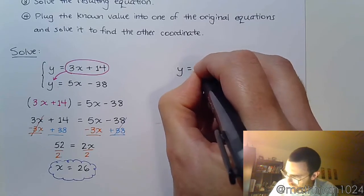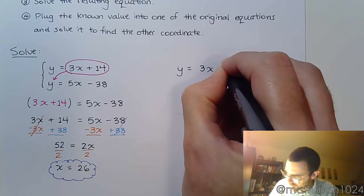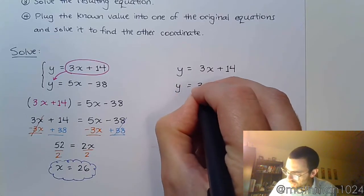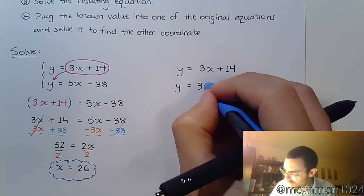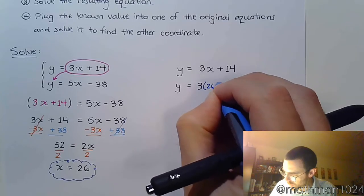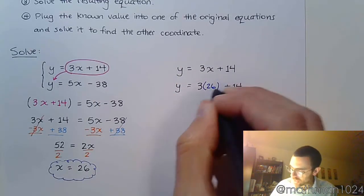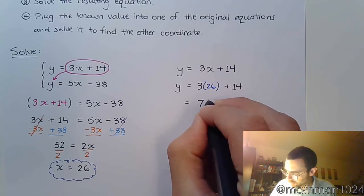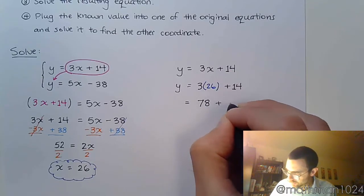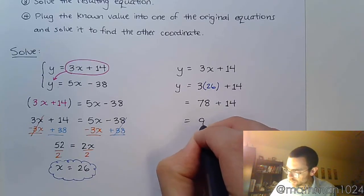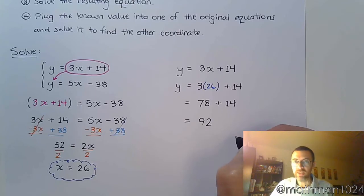Let's go back here to y is equal to 3x plus 14. Now I'm going to replace the x with 26 because that's what we said it was equal to. And we're just going to work this out. 3 times 26 is 78 plus 14, and altogether we get 92.